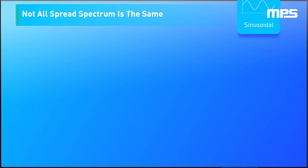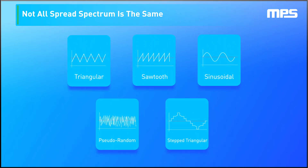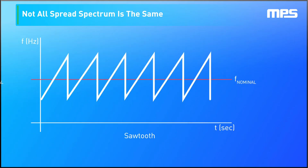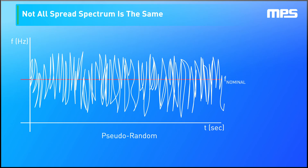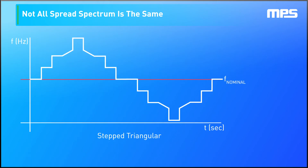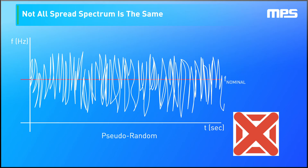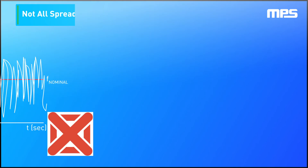Not all spread spectrum is the same. There are many popular ways to implement a spread spectrum algorithm, whether it be with a triangular, sawtooth, sinusoidal, or even pseudo-random profile. In general, we recommend going with a stepped triangular profile, since this evenly distributes the signal noise across the full range. We don't recommend going for a pseudo-random approach, as the attenuation benefit you get from this technique is often less than the others.